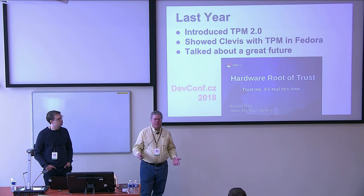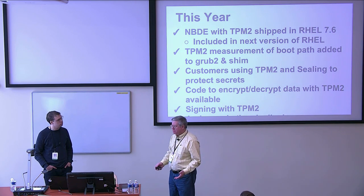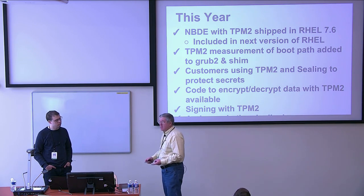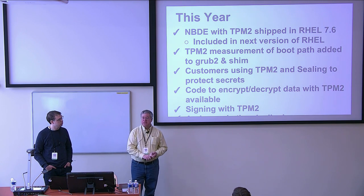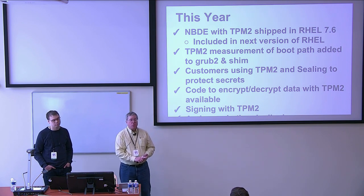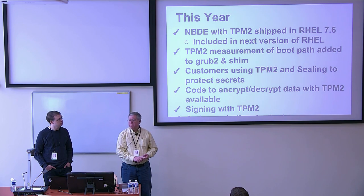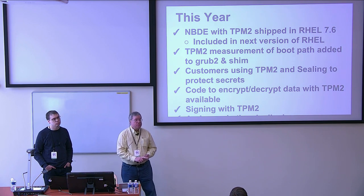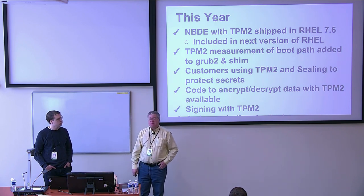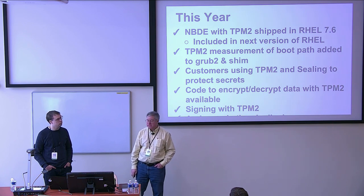So we've heard talks like this before. So what's happened since then? Since the last DEF CON, network-bound disk encryption with TPM 2.0 support has been shipping in Fedora, in RHEL 7.6, and will be included in the future version of RHEL. Some recent developments: we've added measurement of the boot path to the system. We actually have customers using the capabilities of TPM 2 to protect secrets — notably keys of different parts — and some are even using the advanced sealing capabilities.